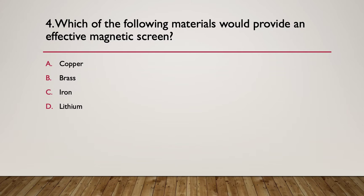Question four, which of the following materials would provide an effective magnetic screen? You're wanting to screen something from a magnetic field. Which one would work best here? A, copper. B, brass. C, iron. D, lithium. Here's the hint. What material is common and will conduct a magnetic circuit? If you're going to use something as a screen, it's got to be reasonably common, easy to get access to, and will conduct a magnetic circuit.